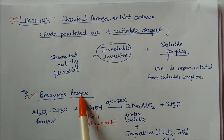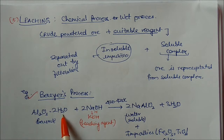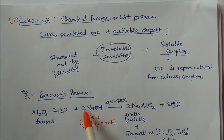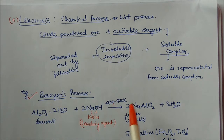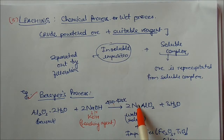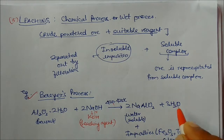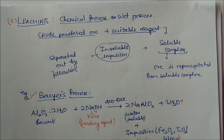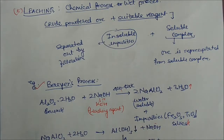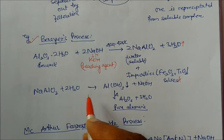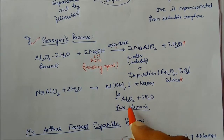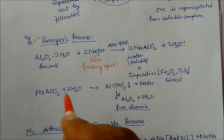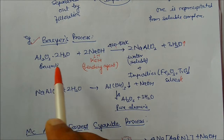In the Bayer process, aluminium oxide (Al2O3) is treated with a leaching agent — sodium hydroxide or potassium hydroxide — at a suitable temperature. This forms a soluble complex: sodium meta-aluminate (NaAlO2) plus water. Impurities like silicates and titanium oxide are separated out through filtration. The sodium meta-aluminate is then hydrolyzed with water to form aluminium hydroxide as a precipitate, and on heating we get pure alumina, thus separating gangue particles from bauxite.